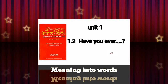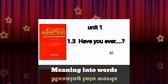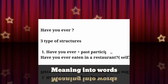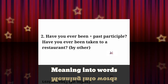Today we study unit 1, section 1.3: 'Have you ever?' There are three types of structures. Number one: 'Have you ever + past participle.' For example, 'Have you ever eaten in a restaurant?' This structure is used when you go to a restaurant by yourself. Number two: 'Have you ever been + past participle.'